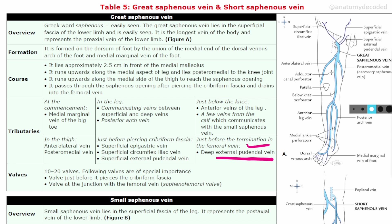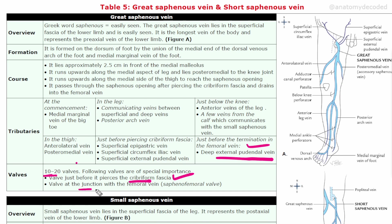There are multiple valves in the great saphenous vein, around 10 to 20. There is a valve where it enters the cribriform fascia, just before it pierces it, and there is a valve at the junction with the femoral vein called the saphenofemoral valve.